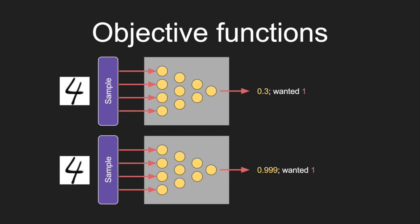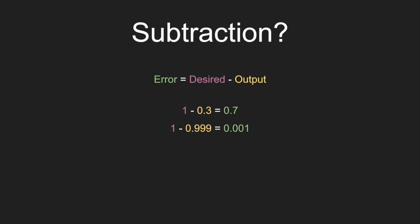The objective function is supposed to be a measure of how close the output from the network is to what we actually want it to be — the difference between the desired and the actual outputs. A simple way to measure the difference between two numbers is subtraction: we take the desired output and subtract the output the network actually gave, and we call that the error. For the first network it's 1 minus 0.3, giving an error of 0.7, whereas for the second network the error is only 0.001.